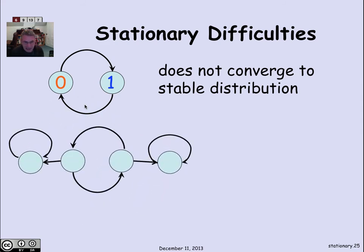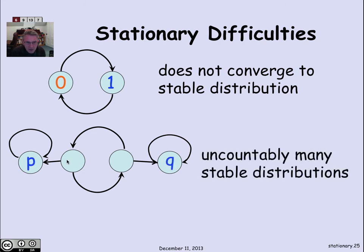Here's a more complicated example where all edges are equally likely and there are exactly two edges out of each vertex, so each edge has weight one-half. The problem is that multiple stable distributions exist: if the probability of being in the middle is 0 and the two absorbing states have probabilities p and 1−p, that's stable because once you're at one absorbing state you loop back. So p and q can be any values between 0 and 1, giving an uncountable number of stable distributions.